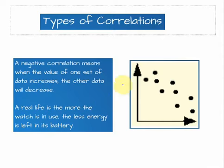And when one thing is increasing, the other thing is decreasing, it is called negative correlation. When the value of one set of data increases, the other data decreases. Real life example is the more the watch is in use, the less energy is left in the battery, or the more we watch movies on mobile, the less battery is left. Quite easy example.